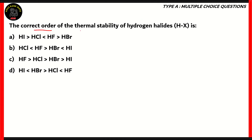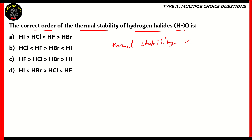The correct order of the thermal stability of hydrogen halides HX is asked, with options including HF > HCl > HBr > HI and three other options. Thermal stability refers to the stability of the molecule in response to heat — how much heat is required to break the bonds. Thermal stability is directly proportional to the energy of dissociation.